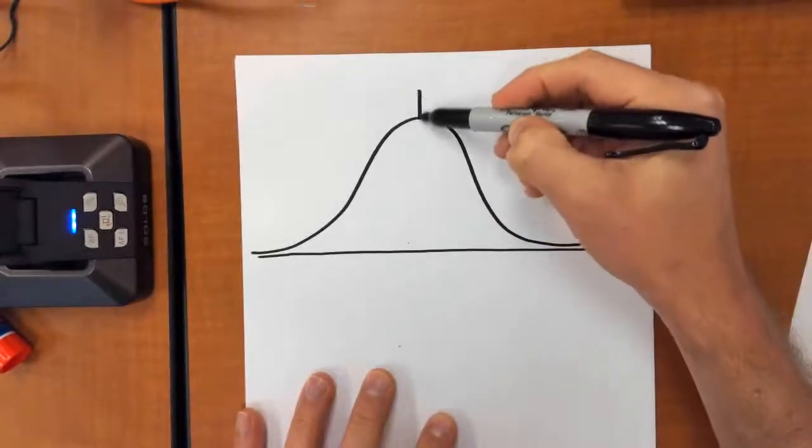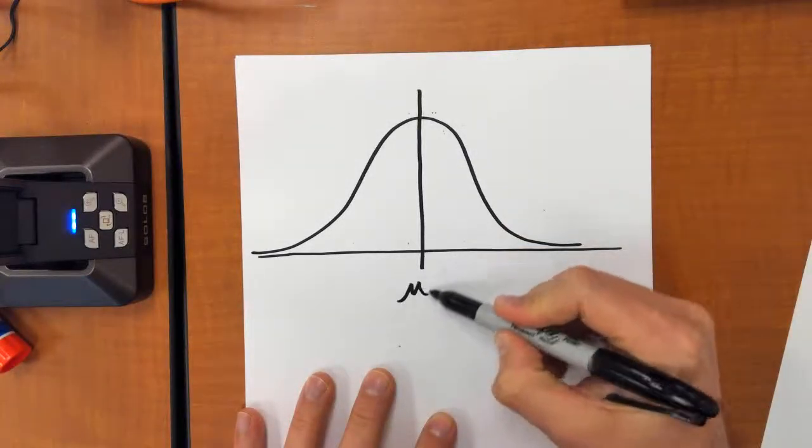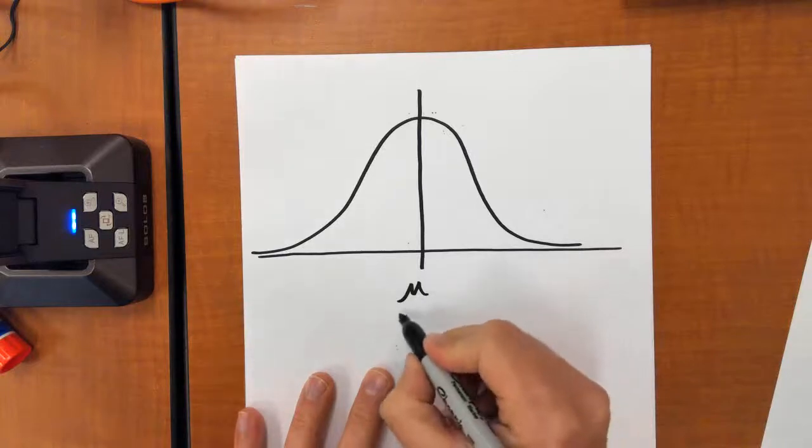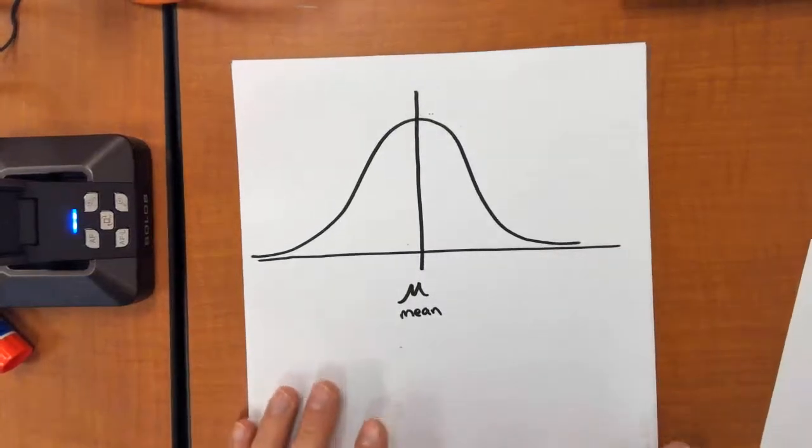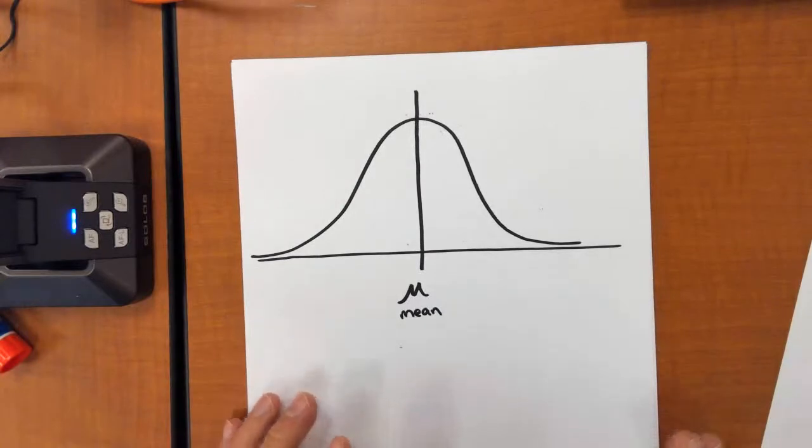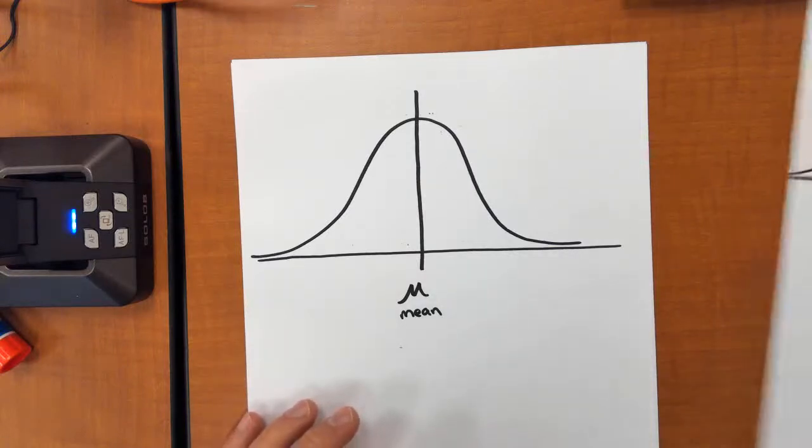So in a normal distribution, we have the average, the mean, right in the middle. Standard deviation is a measure of basically spread, how far apart are our data set, our values, how much have they been spread out.